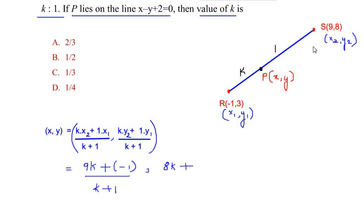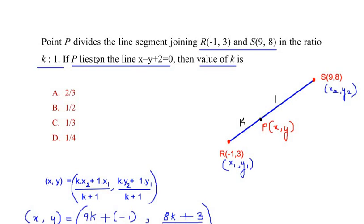These are the x and y coordinates of our point which divides the line, so (x, y) = ((9k-1)/(k+1), (8k+3)/(k+1)). Another thing they have given in the question is the point P lies on the line x - y + 2 = 0.